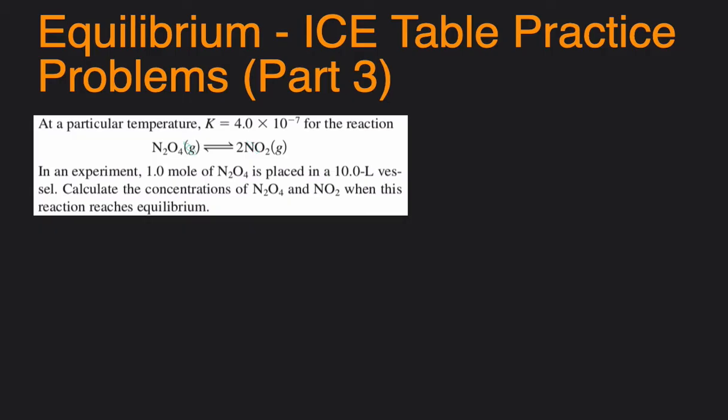In this question, we're given a balanced reaction, we're also given a K value, and then we're given the initial amount of N2O4 and are asked to solve for the equilibrium amount of both of them.